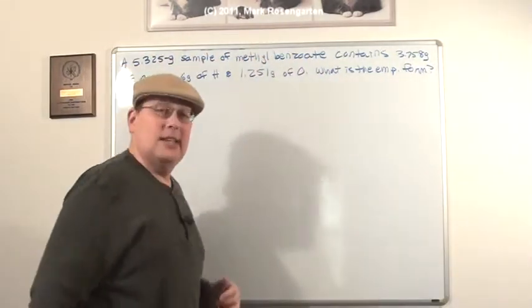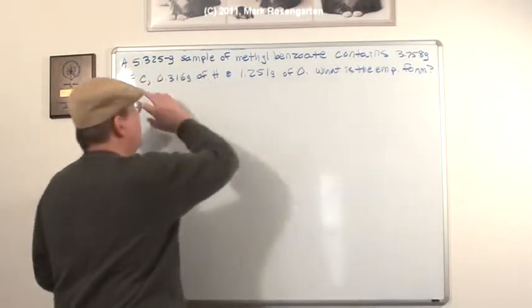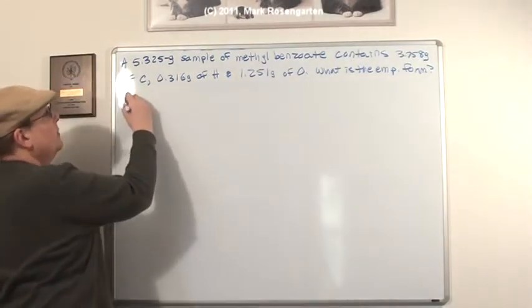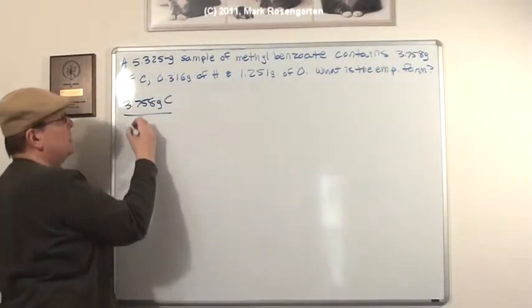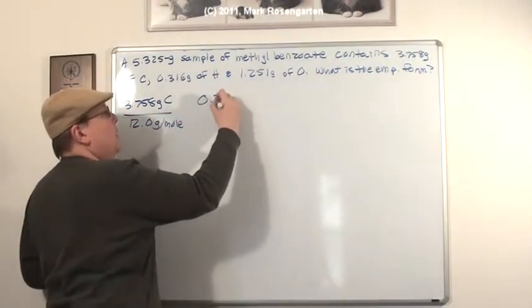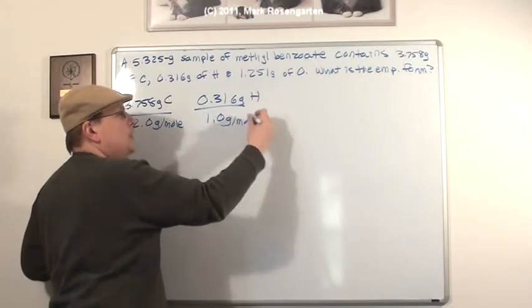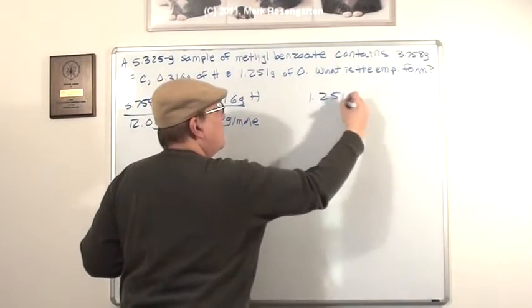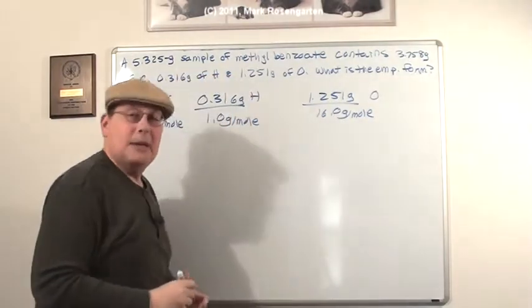Now, if you're given grams of these elements, it's very simple to get a mole ratio. All you need to do is divide the grams of each particular element by the weighted average atomic mass of each element. For example, 3.758 grams of carbon. Divide that by carbon's atomic mass of 12.0 grams per mole. For hydrogen, we take 0.316 grams divided by 1.0 grams per mole, which is hydrogen's gram atomic mass. And then for oxygen, 1.251 grams divided by 16.0 grams per mole, which is oxygen's gram atomic mass.